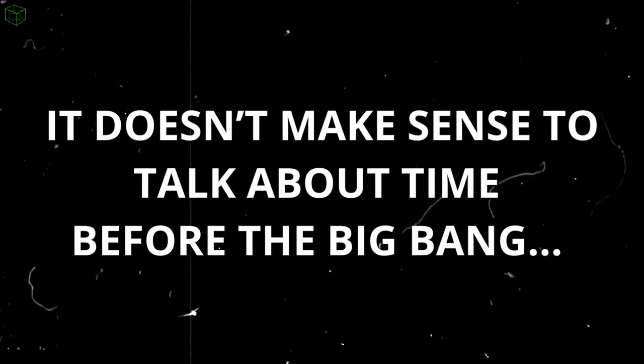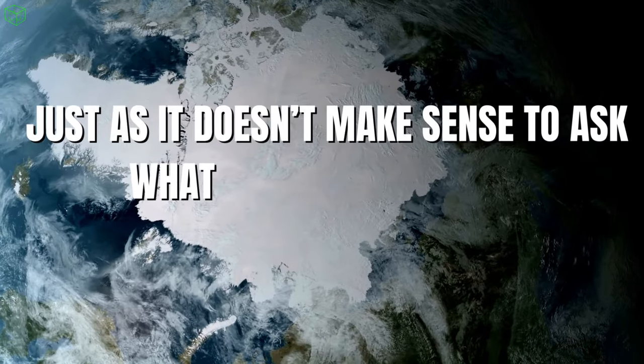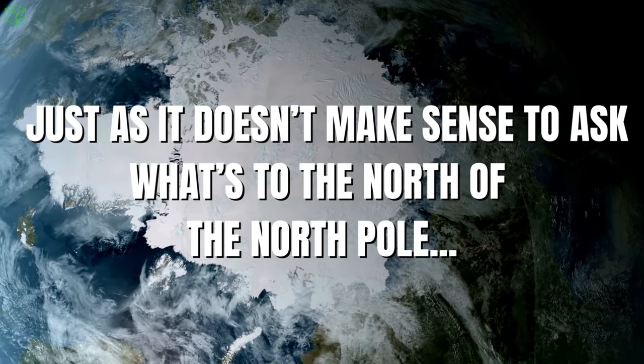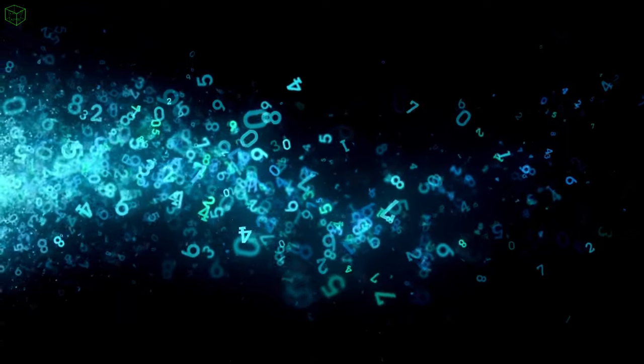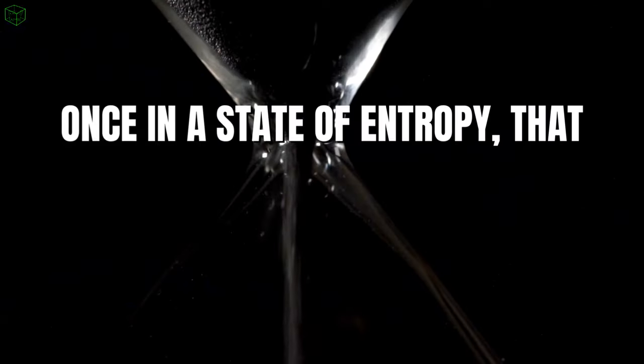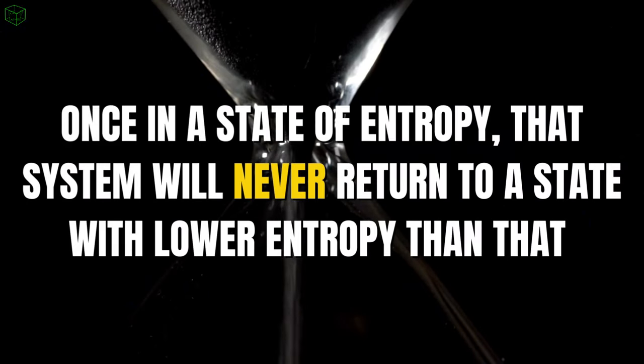It doesn't make sense to talk about time before the Big Bang, just as it doesn't make sense to ask what's to the north of the North Pole. Some define entropy as the degree of disorder in the universe, or the randomness of something. Others may define something similar, like the number of degrees of freedom an arrangement can take. The point is that once in a state of entropy, that system will never return to a state with lower entropy than that.